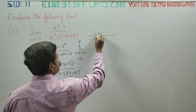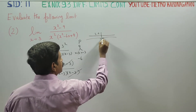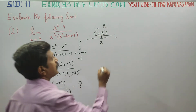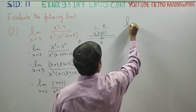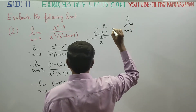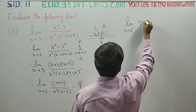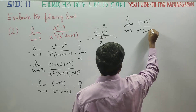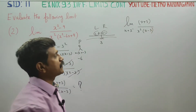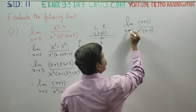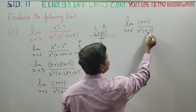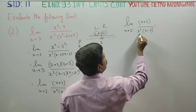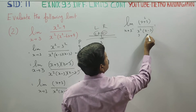We check the left-hand side limit, approaching 3 from the left, using x equals 2.9. Substituting into x plus 3 divided by x squared into x minus 3: as x approaches 3 from the left, 3 minus 3 approaches 0, and 3 plus 3 is 6, 3 squared is 9.